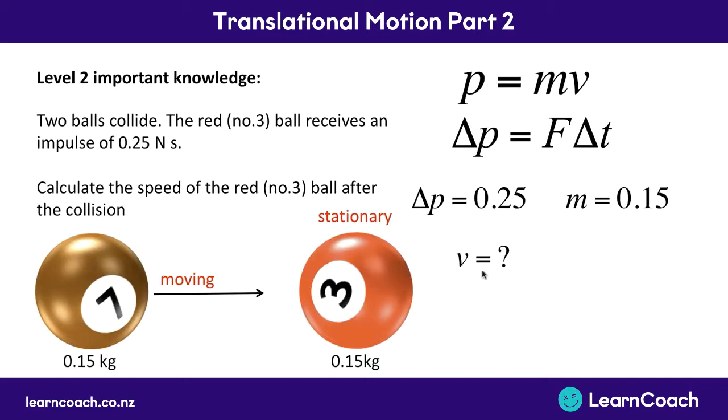So momentum, mass and velocity are all taken up in this top formula here, p equals mv. If we rearrange that for velocity we're going to get velocity equals momentum divided by mass. Plug in our numbers and we're going to get a final velocity of 1.67 meters per second. So this is how we use the momentum formula.